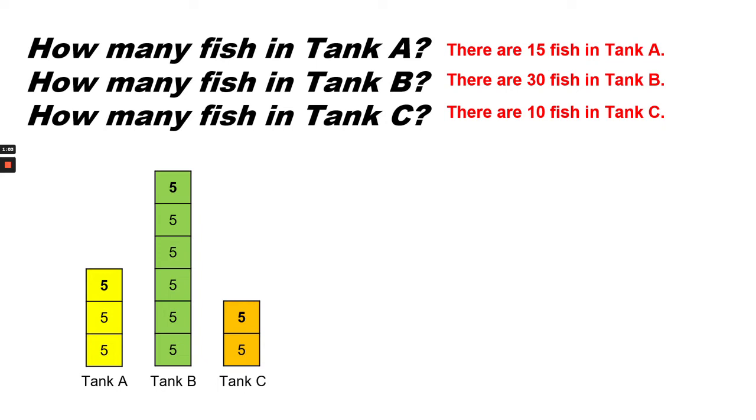There are 15 fish in Tank A. There are 30 fish in Tank B. There are 10 fish in Tank C. I know this because I can count by fives.